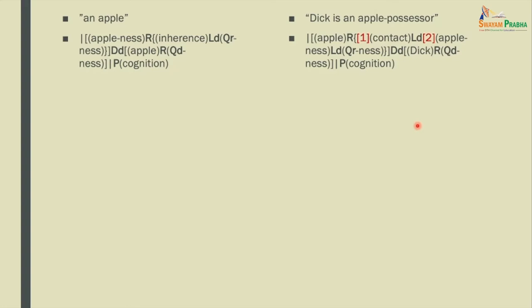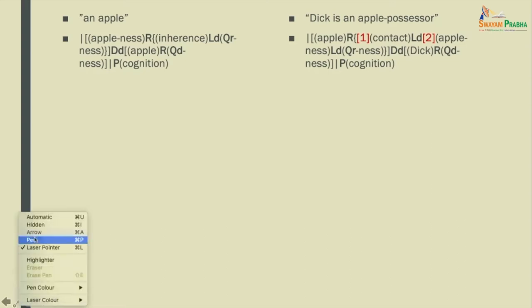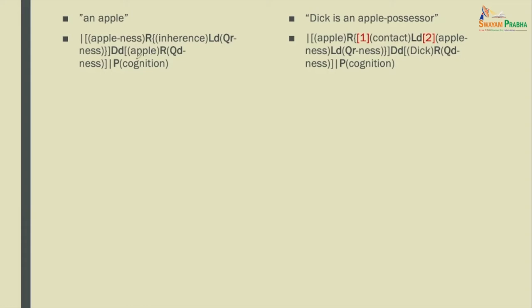Let us compare two different cognitions. One is: I cognize an apple. The other is: I cognize Dick as an apple possessor — that is, Dick is an apple possessor. We may notice that in the first case, the qualifianess has one and only one limiting aspect, which is a relation. But in the second case, the qualifianess has two different limiting aspects: one is contact, and the other is apple possessor. Why this disparity? We will try to explain that.